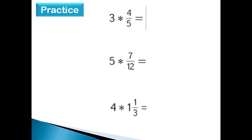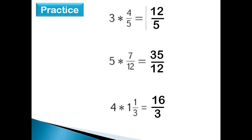Let's do a little more practice independently. Pause your video and answer those three questions on the screen. Three times four-fifths equals 12-fifths. Five times seven-twelfths equals 35-twelfths. Four times one and one-third equals 16-thirds. Today you learned how to multiply a whole number times a fraction. The rule: multiply the whole number by the numerator — three times four gives us 12 — and the denominator stays the same. Pretty simple rule!